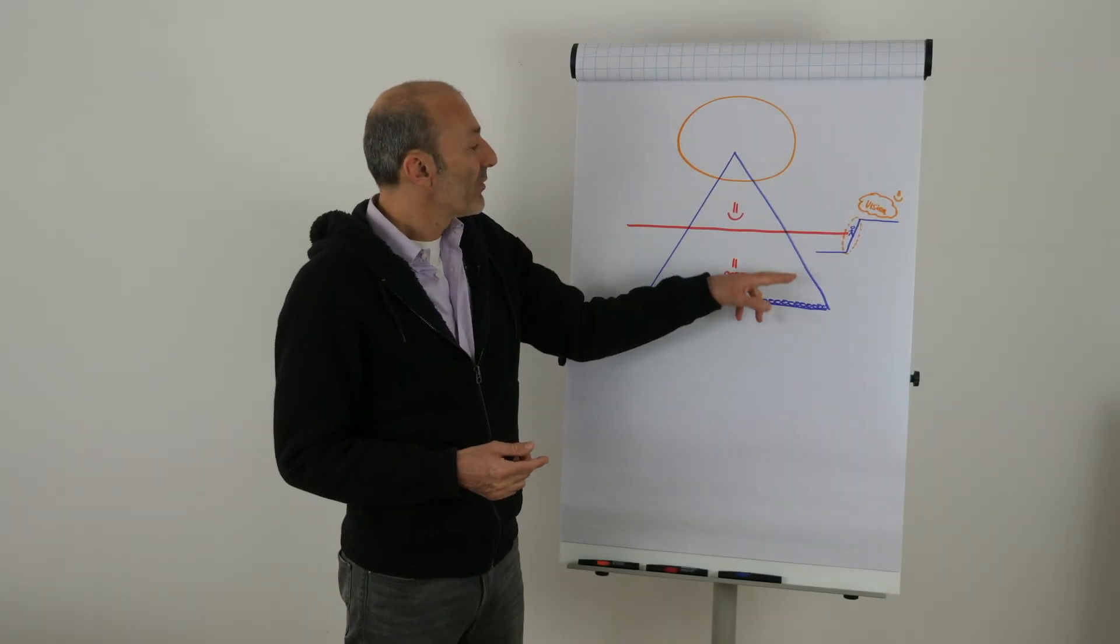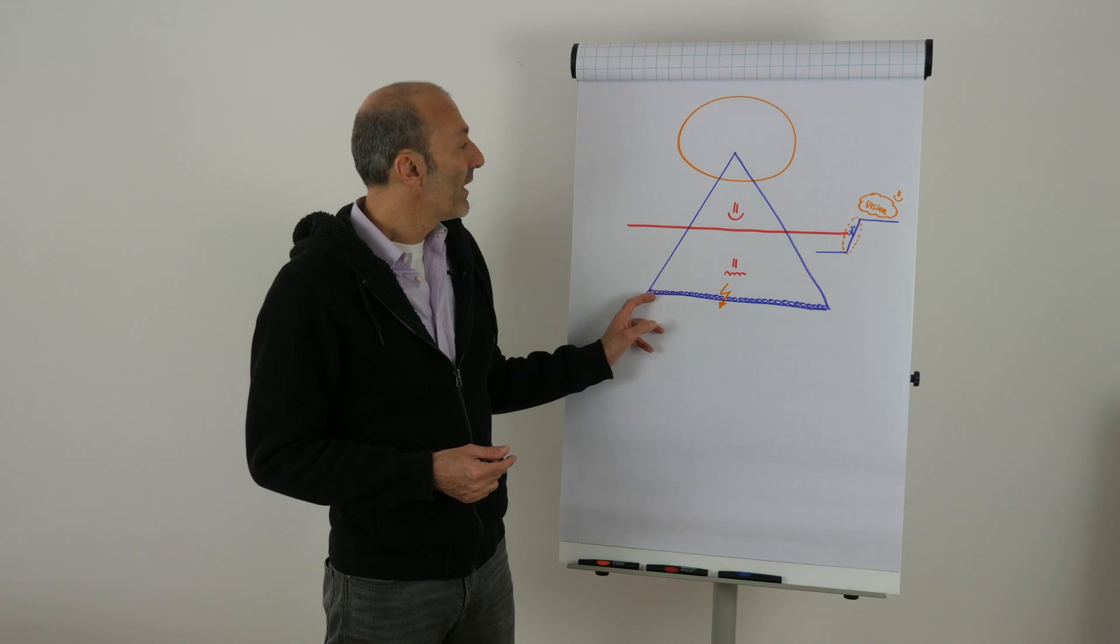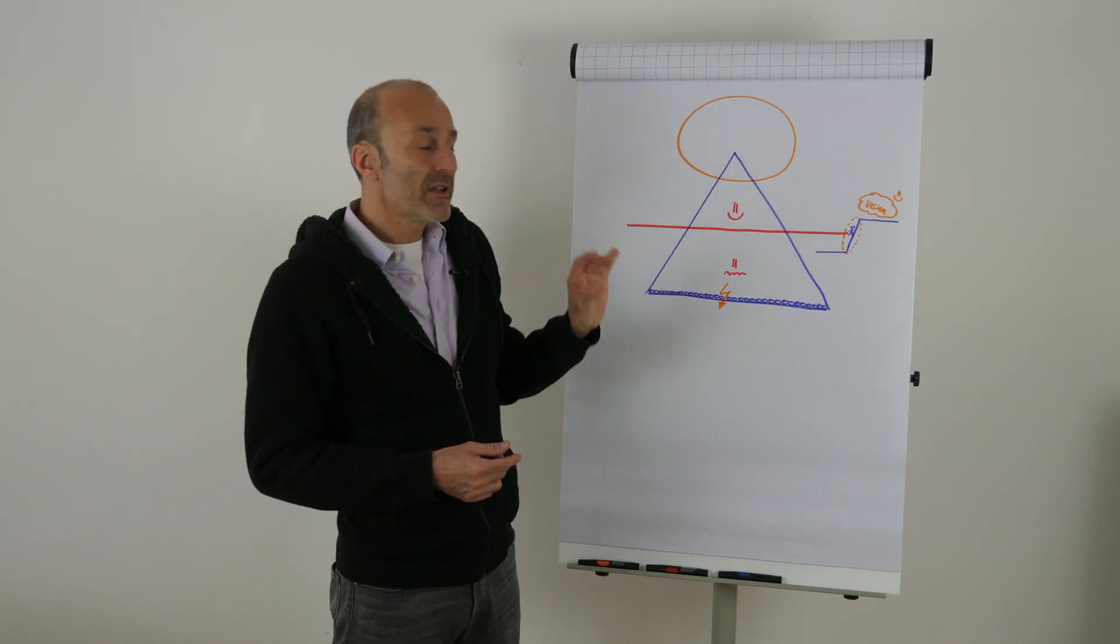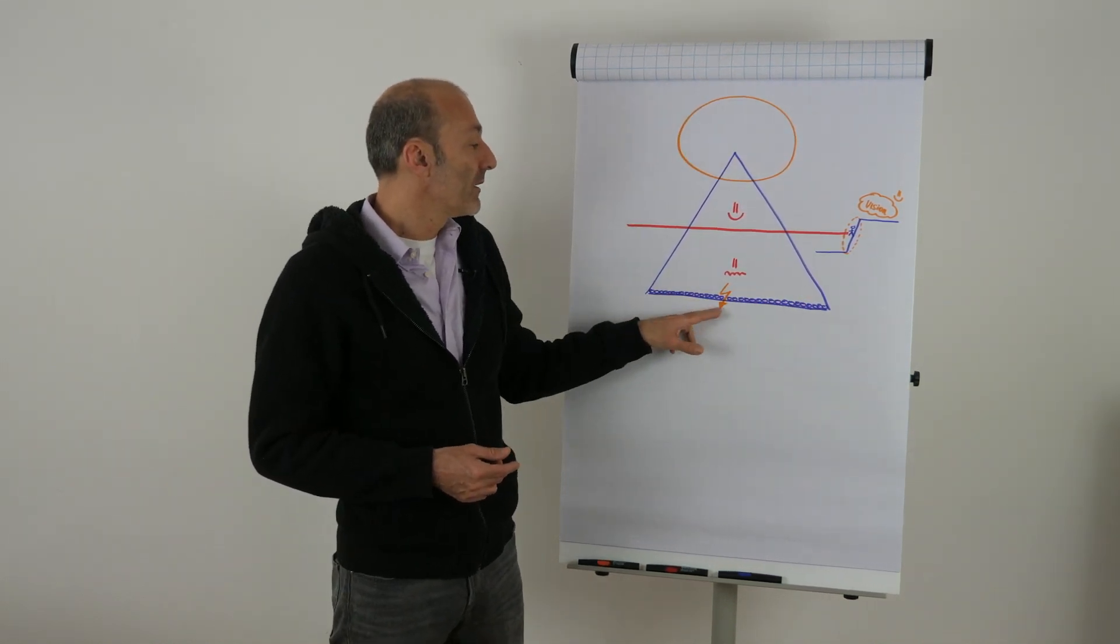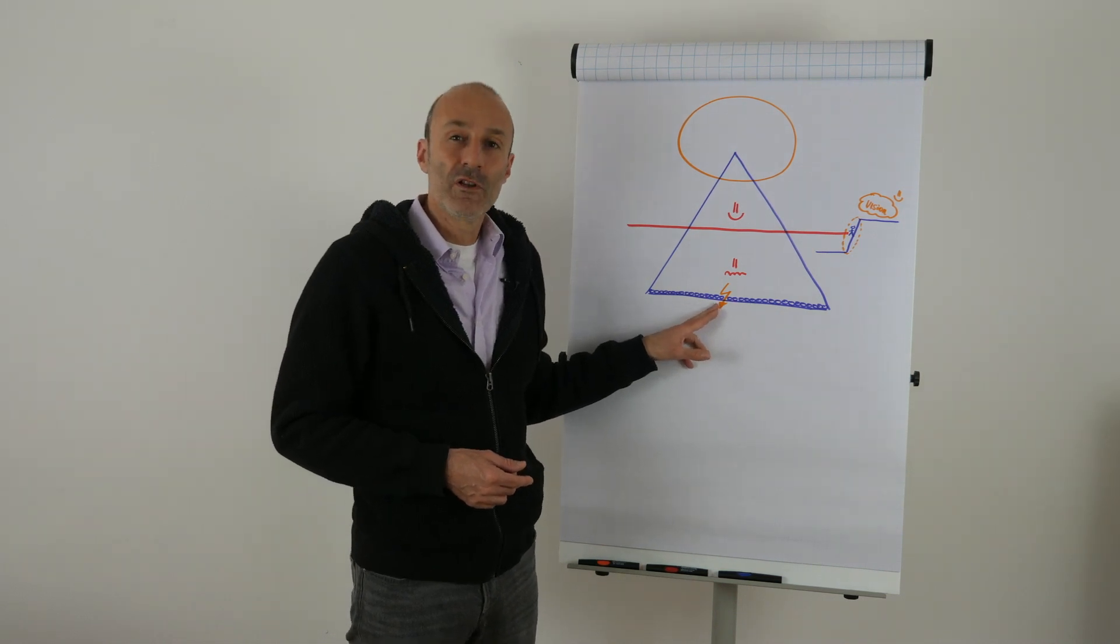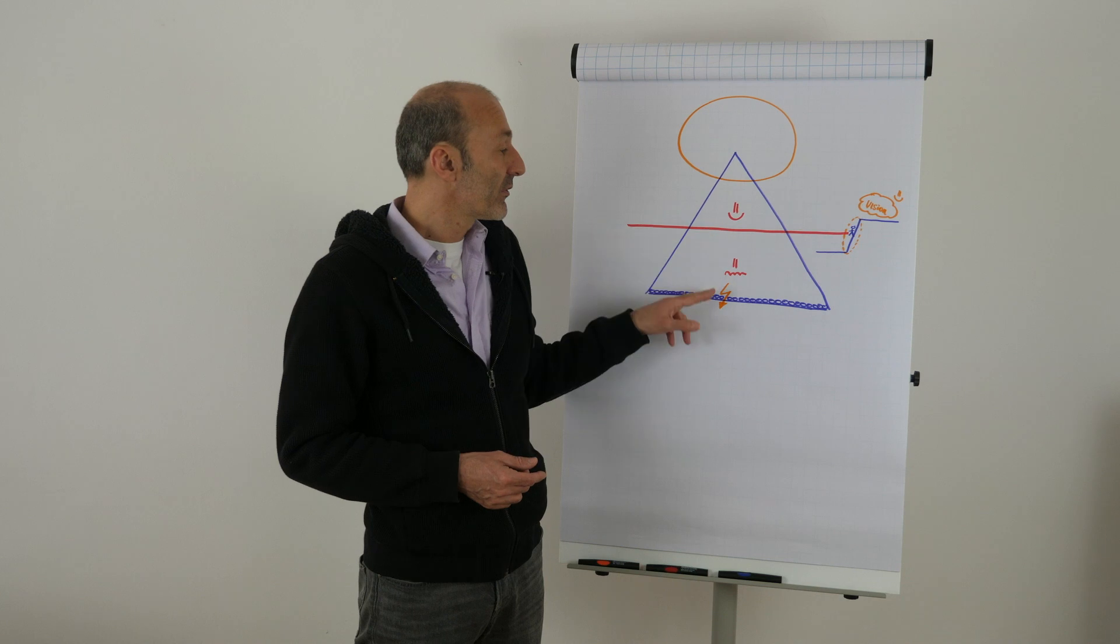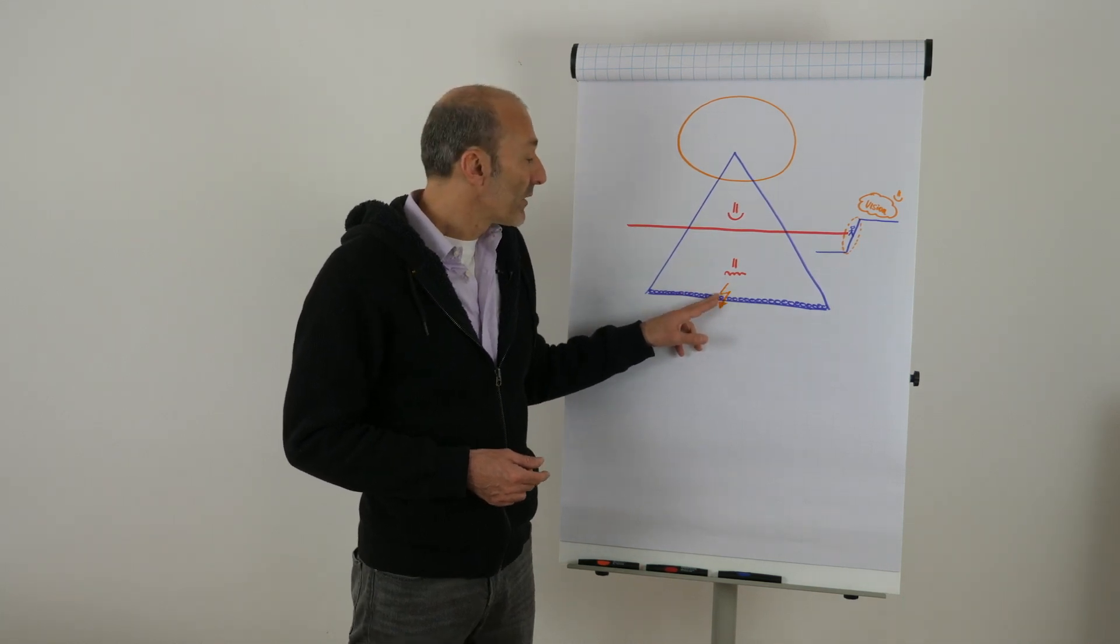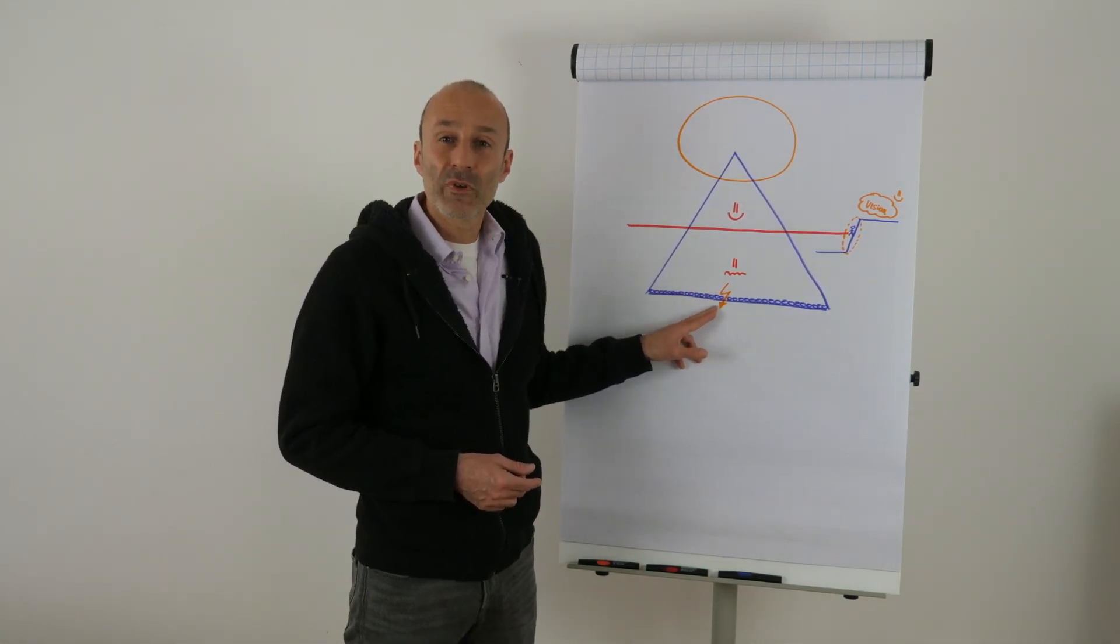If you remember the pyramid of power, we have said all the resources up here, all the people are down here, and one of the biggest problems is that they are in competition with each other for these resources. So the biggest point is that they are in competition.